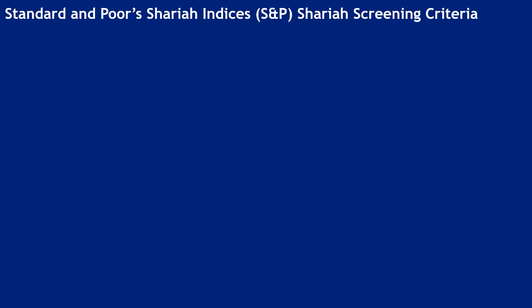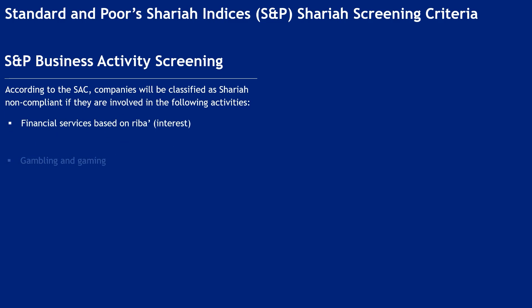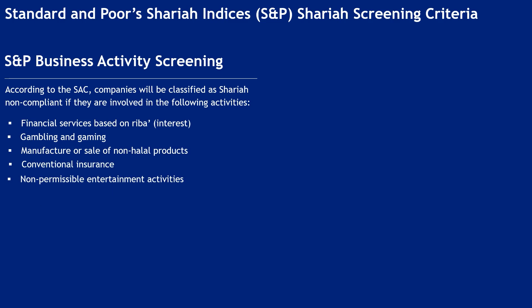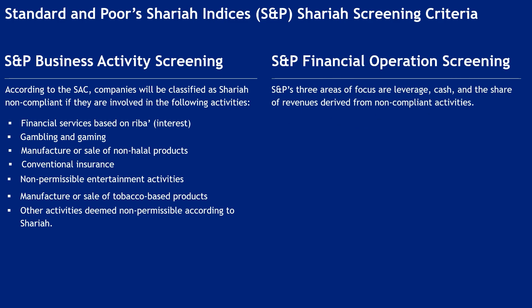Standard and Poor's (S&P) Shariah Indices — Business Activity Screening. Companies will be classified as Shariah non-compliant if involved in: financial services based on riba, gambling and gaming, manufacture or sale of non-halal products, conventional insurance, non-permissible entertainment activities, manufacture or sale of tobacco-based products, and other activities deemed non-permissible according to Shariah. S&P's three areas of focus are leverage, cash, and the share of revenues derived from non-compliant activities.